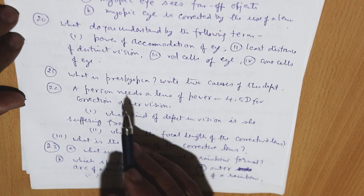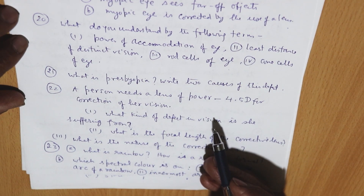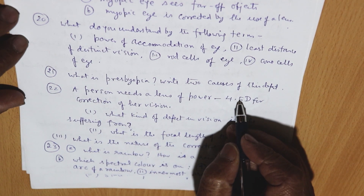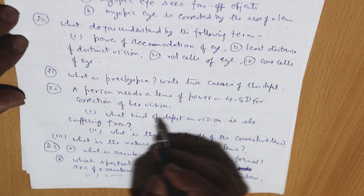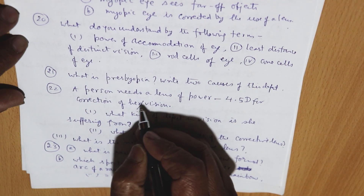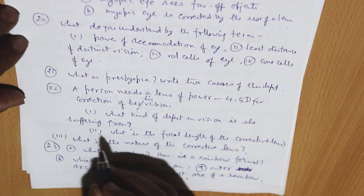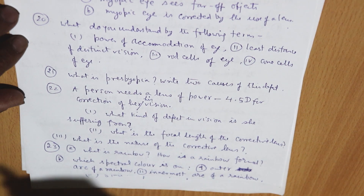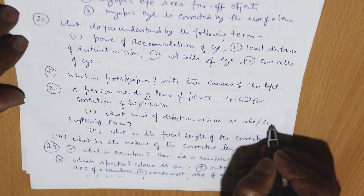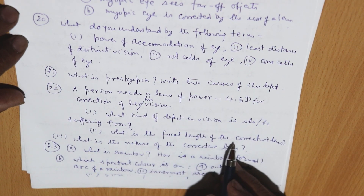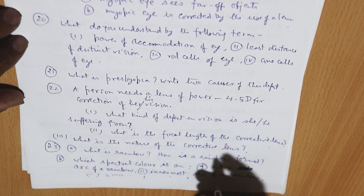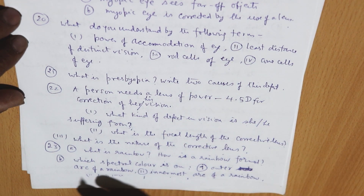A person needs a lens of power −4.5 dioptre for correction of her vision. Number one: what kind of defect in vision is she suffering from? Two: what is the focal length of the corrective lens? Three: what is the nature of the corrective lens — is it a concave lens or a convex lens?